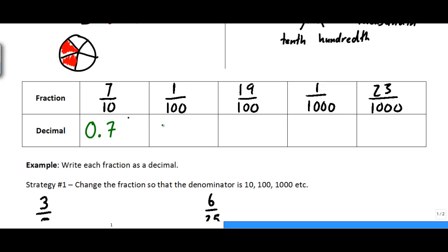Here I've got 1 over 100 or 1 one hundredth. Remember that the second place value was the hundredth place. So I'm going to put a 1 in that spot, a 0 here and then a 1 in the hundredth spot. Here I have 19 hundredths.